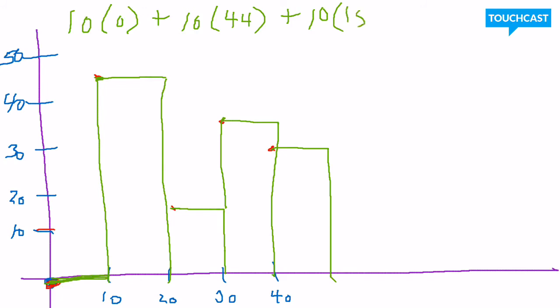Plus my third rectangle is 10 seconds wide times the height of 15, plus my fourth rectangle 10 seconds wide times the height of 35. You're going to have to keep going. This is going to take 12 rectangles.